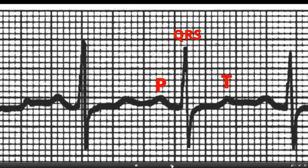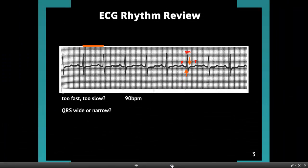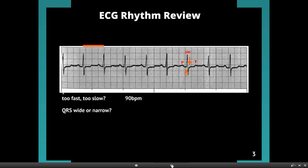Let's take a look at where the QRS starts — I'm going to put it down right on the line right there — and where does it end? It's where the S-wave, the bottom spike, comes back to baseline. I'm going to put it down right about here, and we can count in between: one, two, and a half. That puts us under three boxes, so we are narrow. That means the signal from the AV node was transferred through the Purkinje system. So QRS, we'll put this down as narrow.